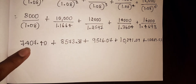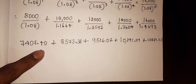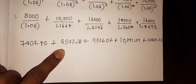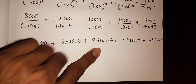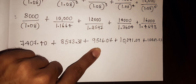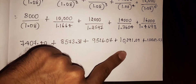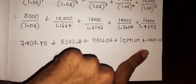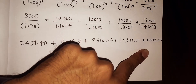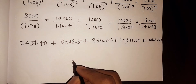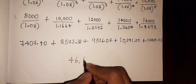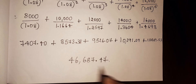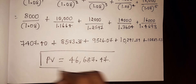Now add all the values: 7,407.40 plus 8,573.38 plus 9,526.37 plus 10,291.09 plus 10,889.53. The total present value is 46,687.47.